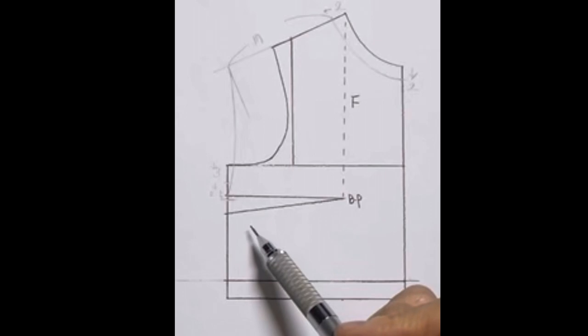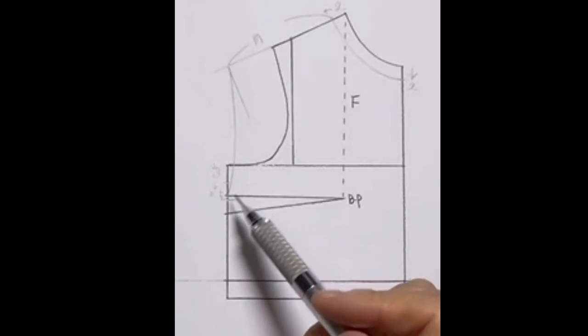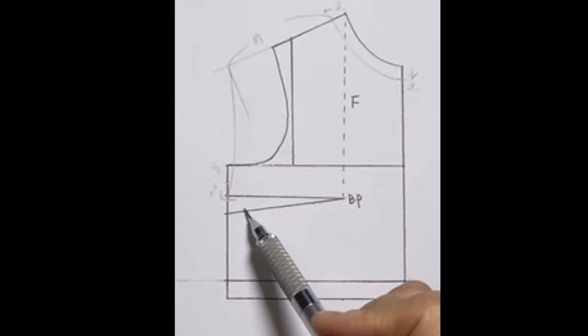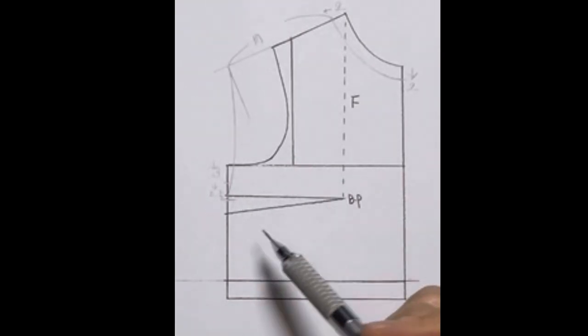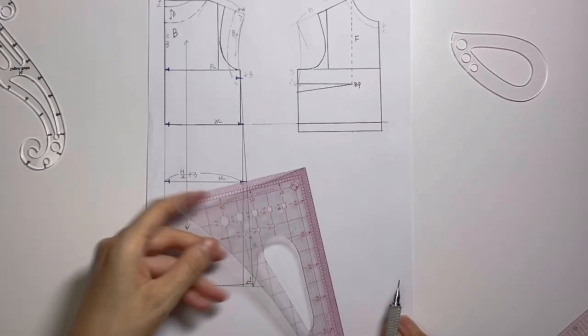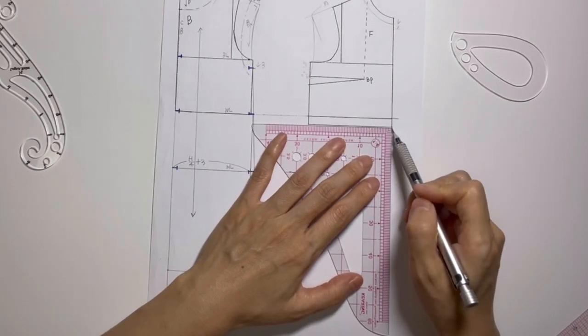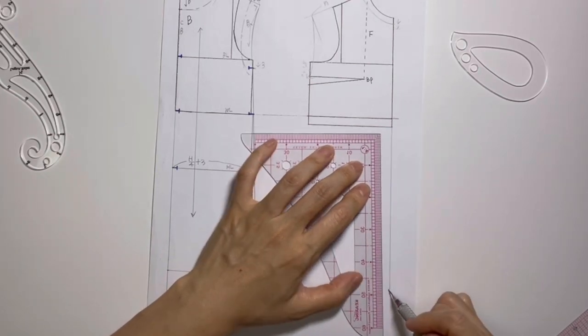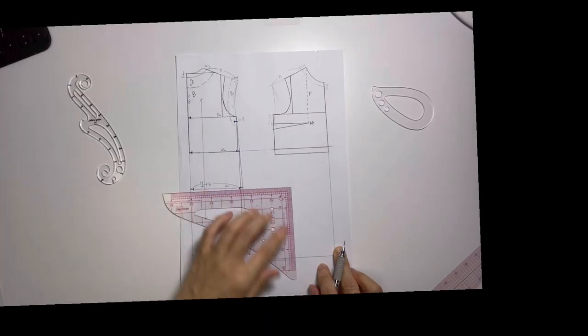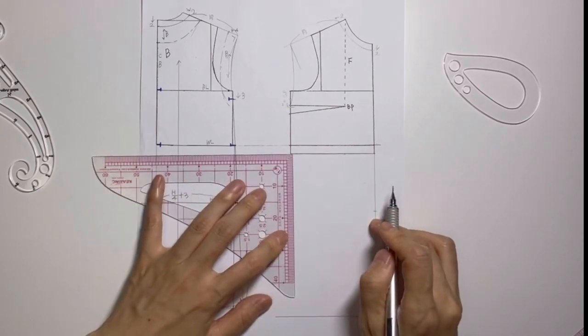When not using a bust dart, last time for the dress we reduced this amount at the hem, but this time since it's a vest we're reducing at the armhole. There are various methods to handle darts, so try applying them one by one. Now extend the length. First from the waist, extend 50cm down to draw the hem.